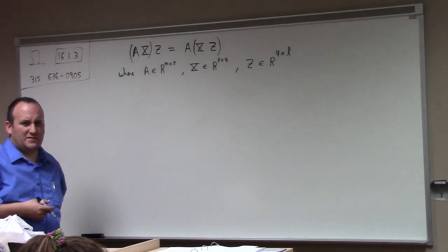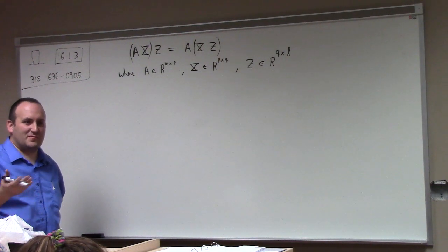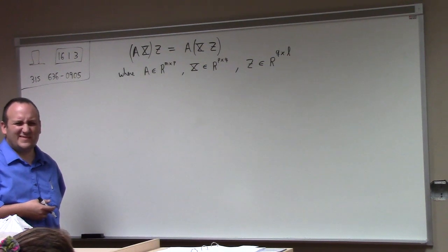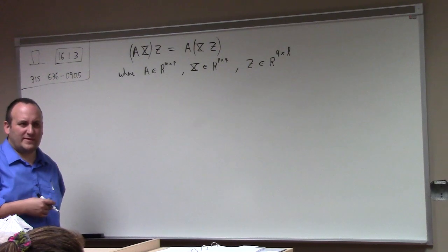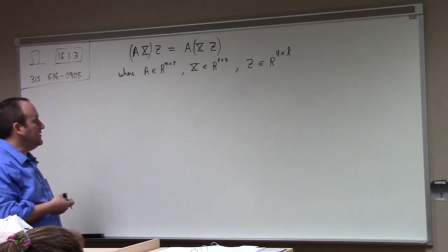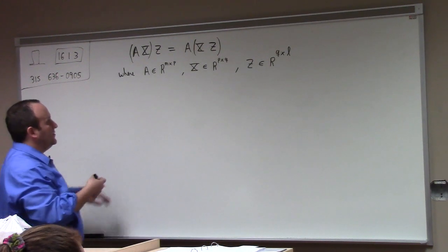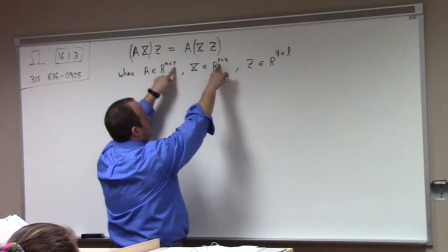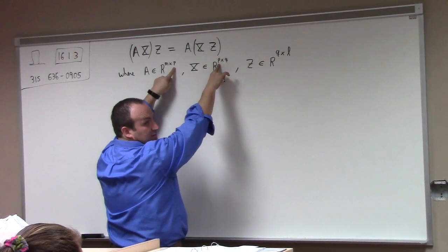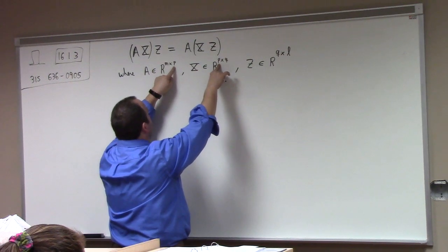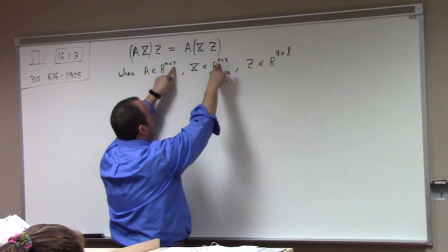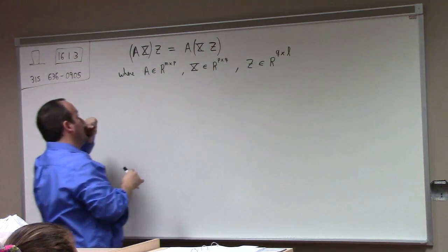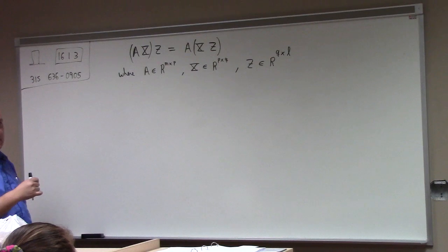What's a word for when two matrices are multipliable? You could call them multipliable matrices. Some books use the word conformable. There doesn't seem to be a good agreement on what to say about two matrices when they can be multiplied, but we need to understand when they can be multiplied. You need to have the number of columns in the left factor match the number of rows in the right factor. So we'd like to prove the identity above.